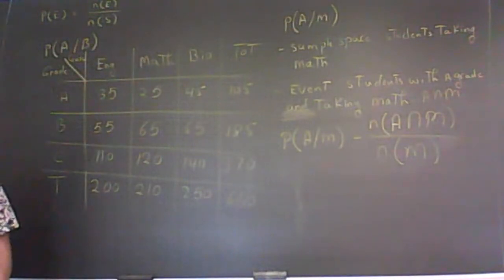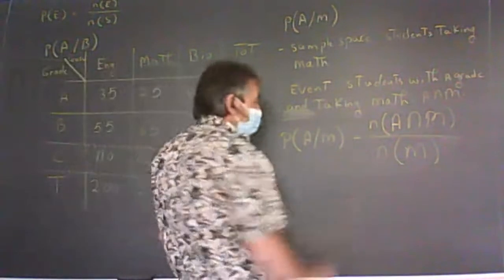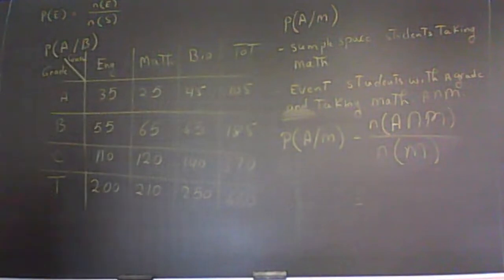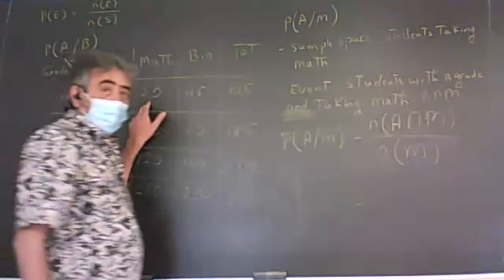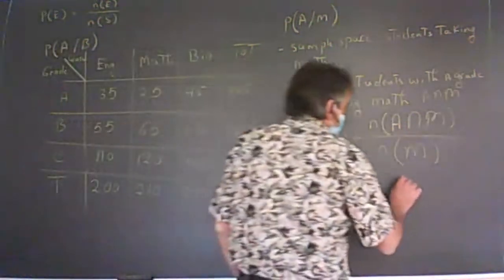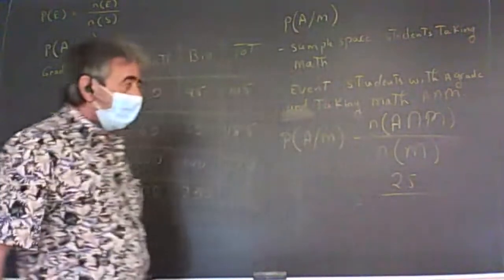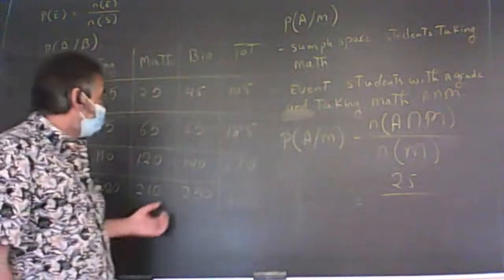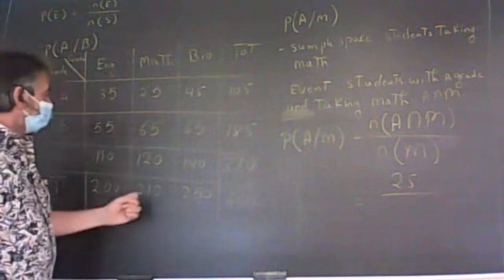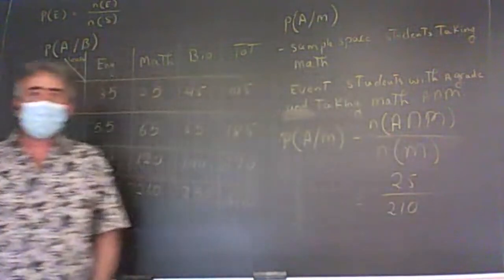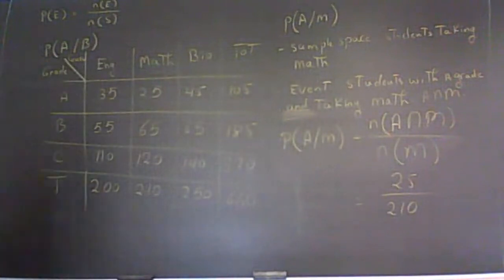Now let's apply the probability rules. The probability of A given math equals the number of elements in the event — N(A ∩ M) — divided by N(M), the number of elements in the math sample space. How many students taking math got an A? 25. Divided by 210, the total students in math.